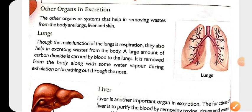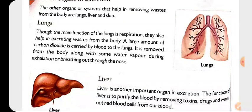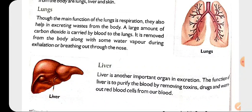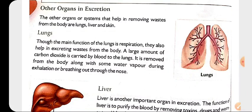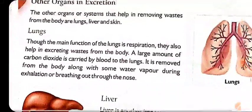Hello students, we are going to start the next topic that is excretion. We have done the excretion done by the kidneys — the removal of urine from our body. There are also other organs which help in excretion, that is, the removal of metabolic waste from our body. Lungs help remove carbon dioxide, liver helps with toxic waste, and skin helps remove excess water, urea, and salt from our body.